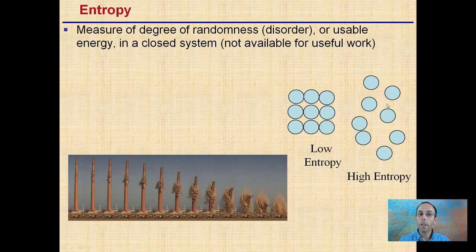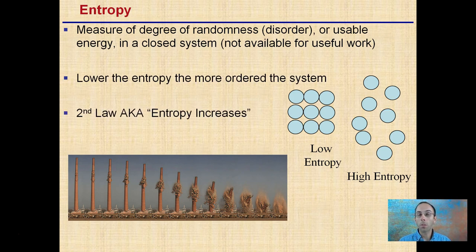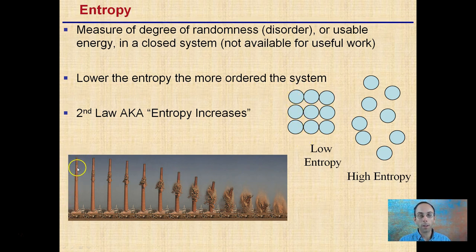Entropy is the measure of the degree of randomness or disorder, or usable energy in a closed system that's not available for useful work. When we see something as low entropy, it's a much more ordered, organized system — as you can see here in the tall tower. Here we have a very low entropy, and we are increasing our entropy with that increasing amount of randomness that occurs.